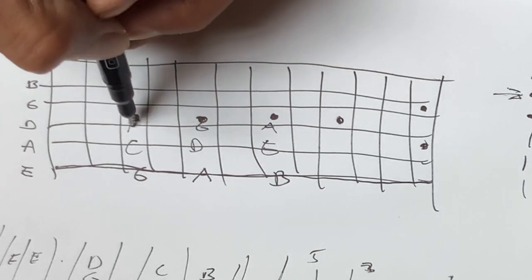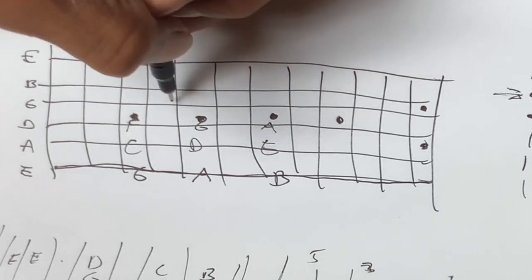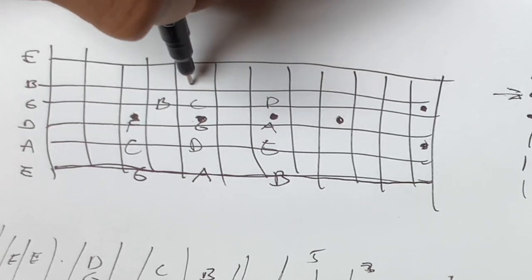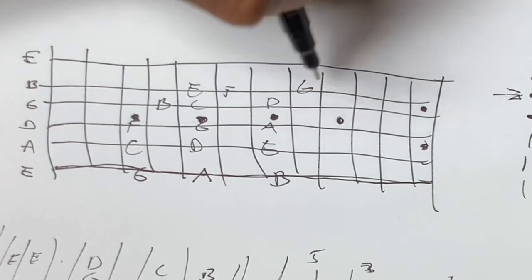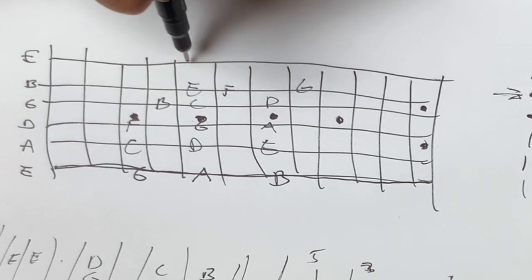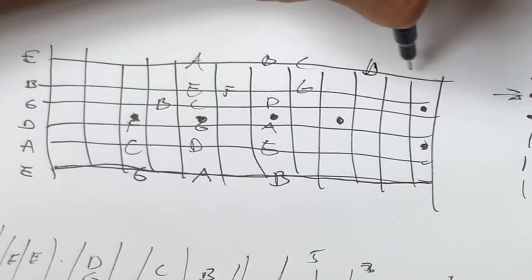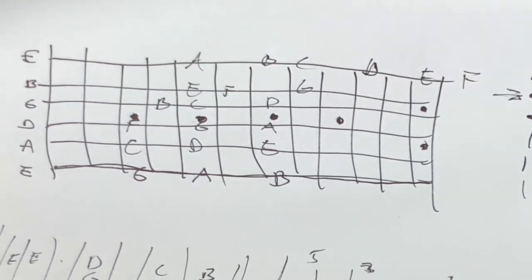That's going to be followed by 2, 3, 5. F, G, A, B, C, D. By another 2, 3, 5. C, D, E, F, G. By a follow-up, 2, 4, 5. G, A, B, C. Skip a fret. D, E, F. Alright, we'll go this way. G, A, B, C, D, E. Followed by F, G, A.